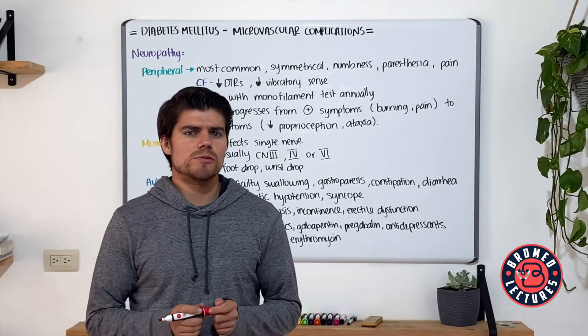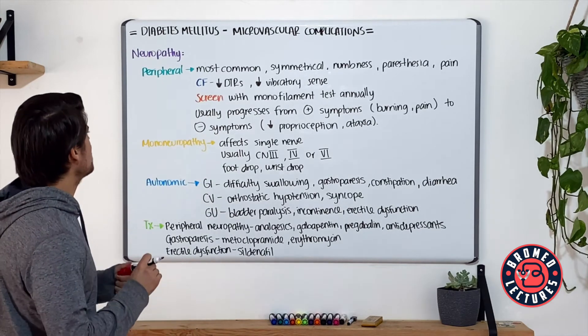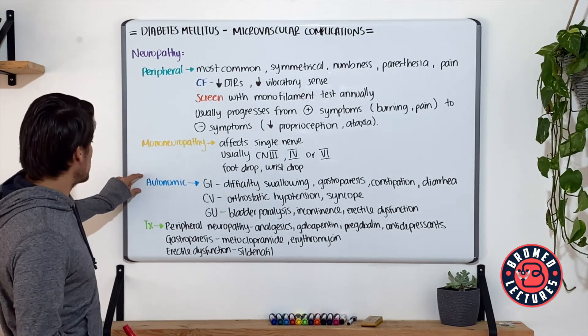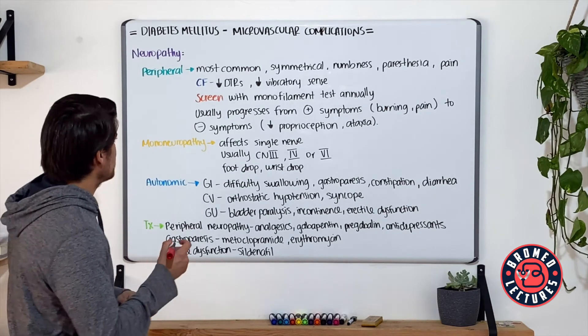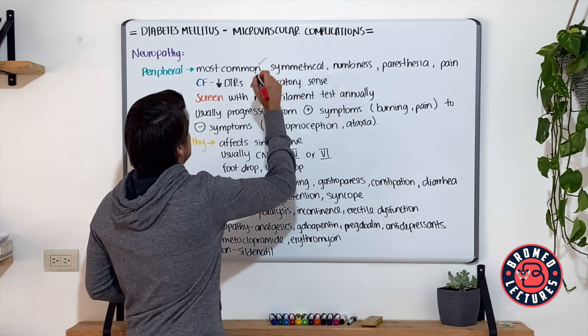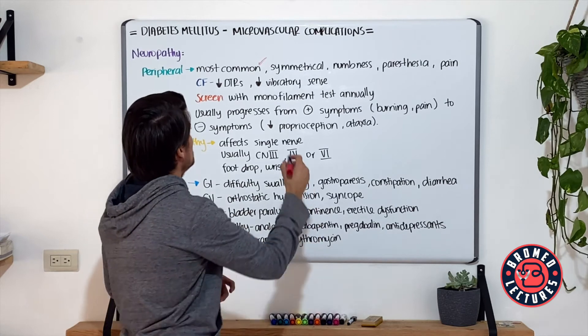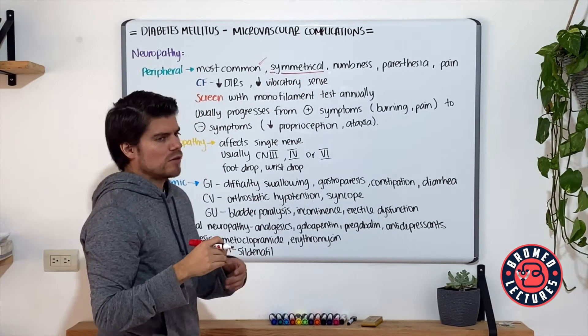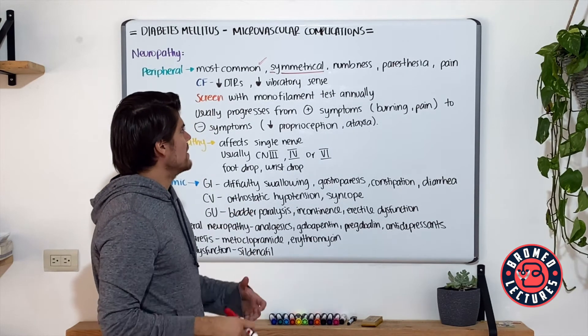Now let's finish with neuropathy. With this one, we have three different types of presentation: peripheral, mononeuropathy, or autonomic. For peripheral, this is the most common one. These patients describe symmetrical involvement with a glove and sock pattern of both hands, both feet.